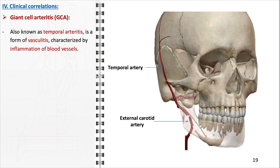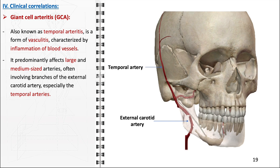Let's pivot to the clinical implications associated with the facial vasculature, particularly focusing on giant cell arteritis, also commonly referred to as temporal arteritis. This condition is an inflammatory vasculitis that predominantly targets large and medium-sized arteries, most notably involving branches of the external carotid artery such as the temporal arteries. If left unaddressed, the inflammation can manifest as headaches, scalp tenderness, or jaw claudication, and more alarmingly, it can lead to sudden, irreversible vision loss.